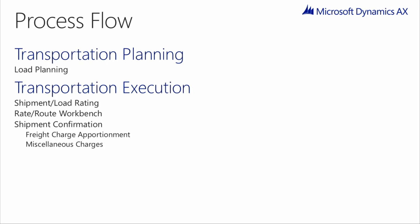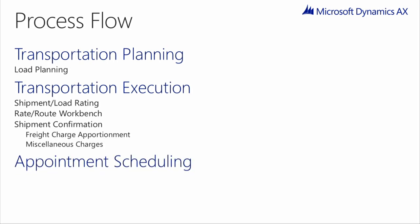After this rating and routing process is complete, we will ship confirm the order. Two optional steps within the process are appointment scheduling and freight reconciliation. These processes can be utilized if your business procedures allow for them. We will take a deeper look into these in a later module.